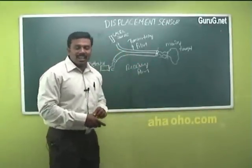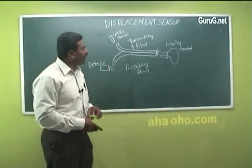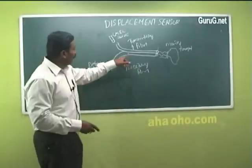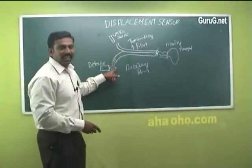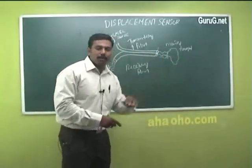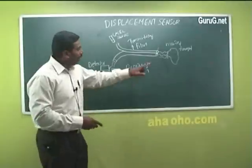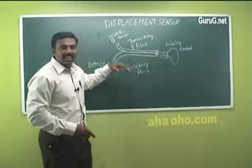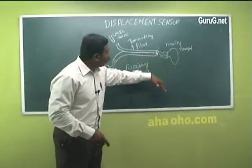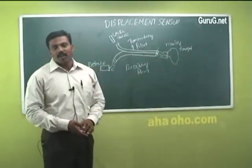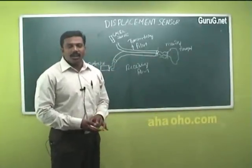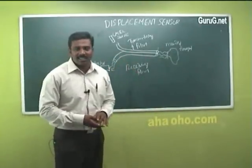With the help of the change in intensity, we can find the displacement of the moving target. If the intensity of the received light is less, the moving target is moving away from the optical fiber. If the intensity is high, the target is moving towards the optical fiber. This is how displacement is determined using optical sensors.